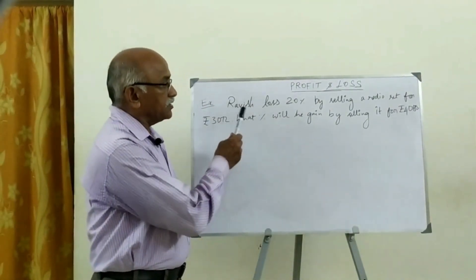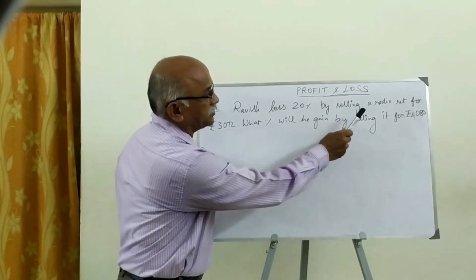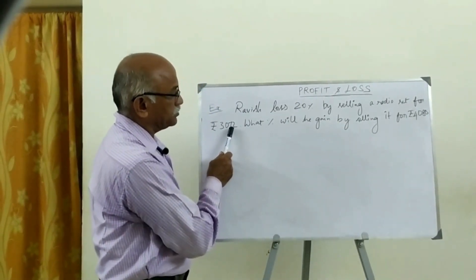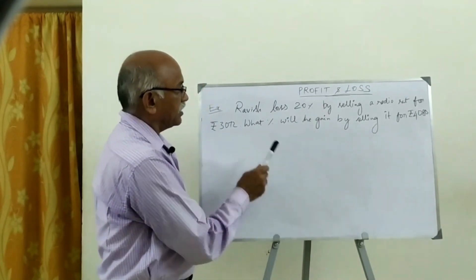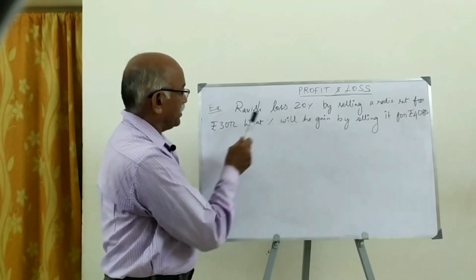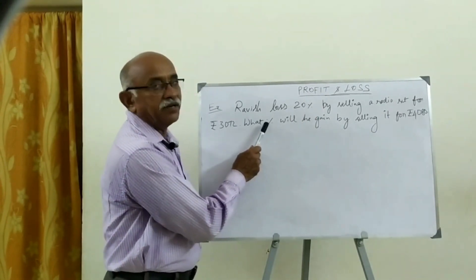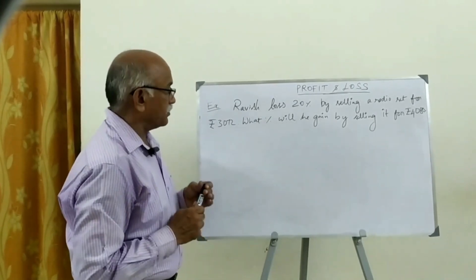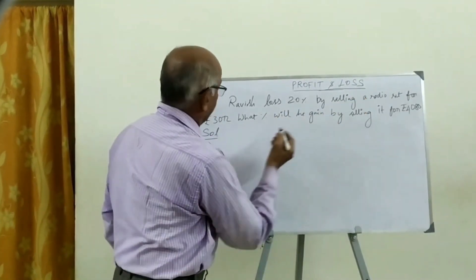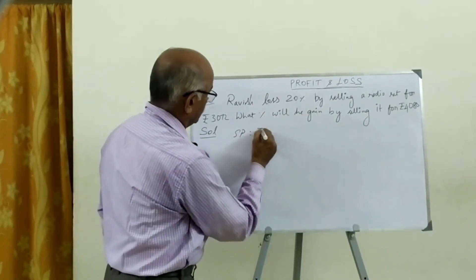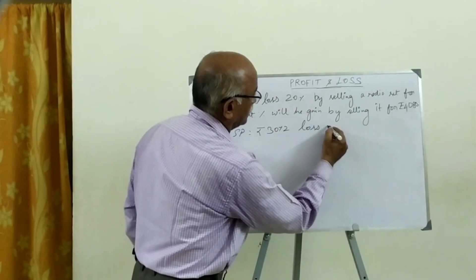The next sum is Ravi lost 20% by selling a radio set for Rs. 3072. What percent will he gain by selling it for Rs. 4080? The next sum is Ravi lost 20% by selling a radio set for Rs. 3072. Loss, 20 percentage.